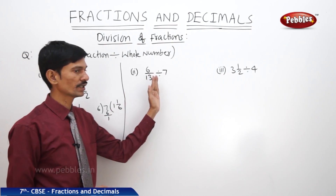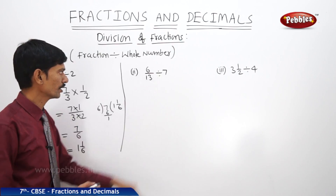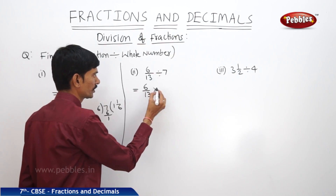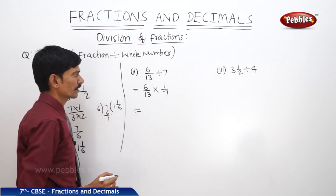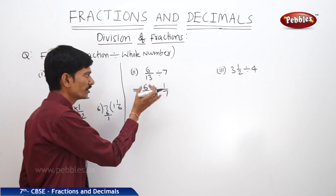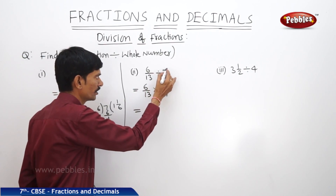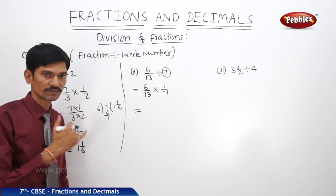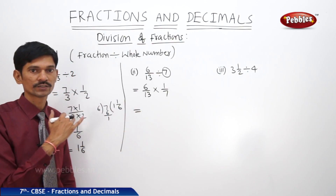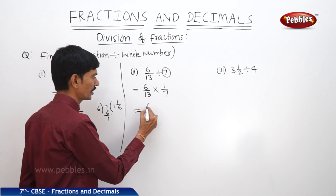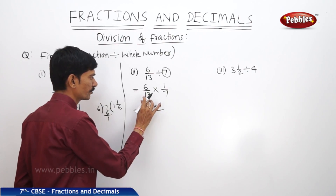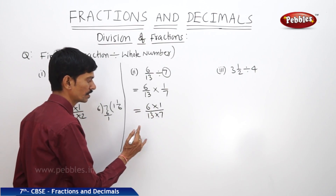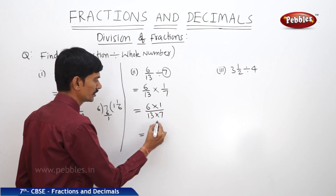For 6/13 divided by 7: to divide a fraction by a whole number, we multiply the fraction by the reciprocal of 7, which is 1/7. Multiplying both numerators and both denominators: 6×1 / 13×7. We cannot cancel here, so the result is 6/91.